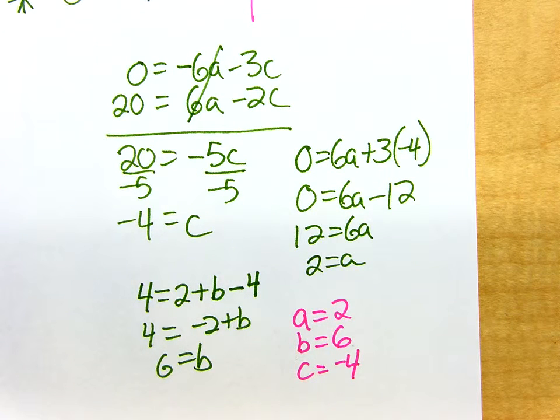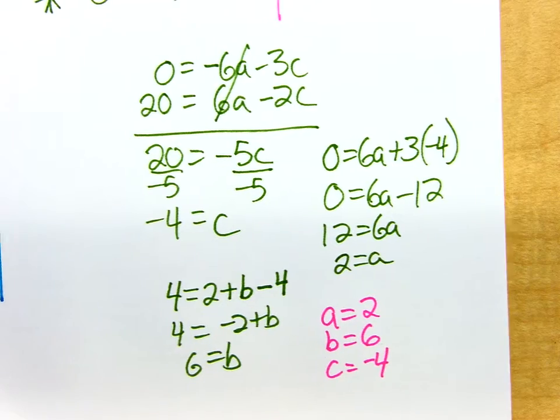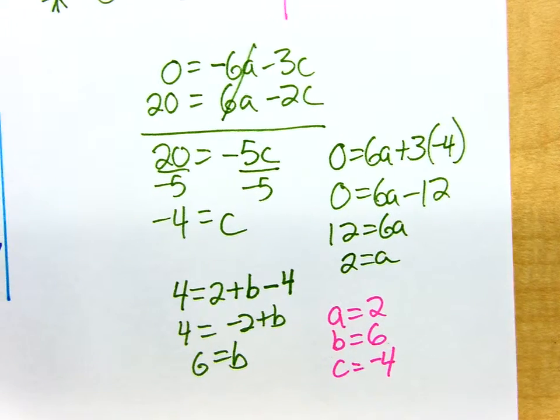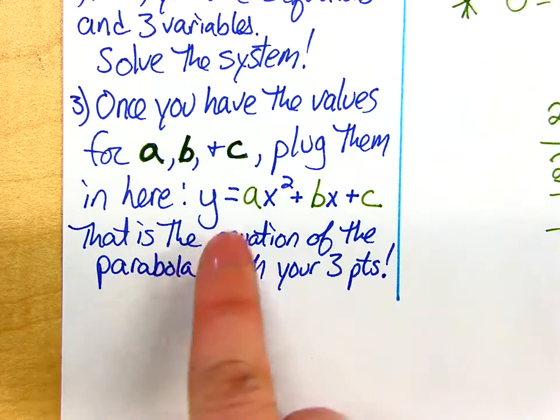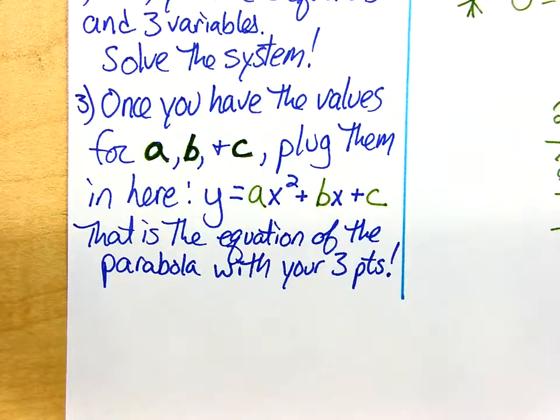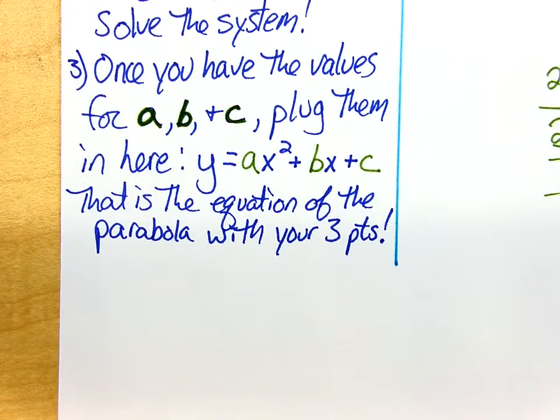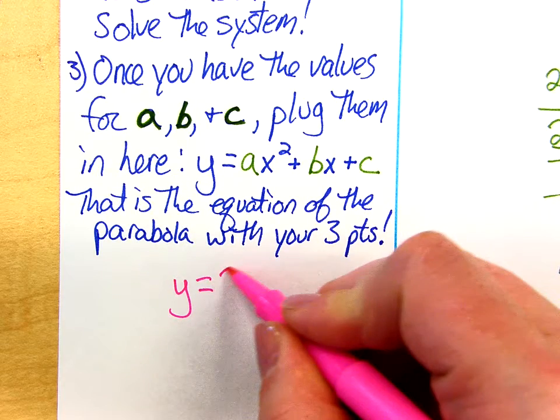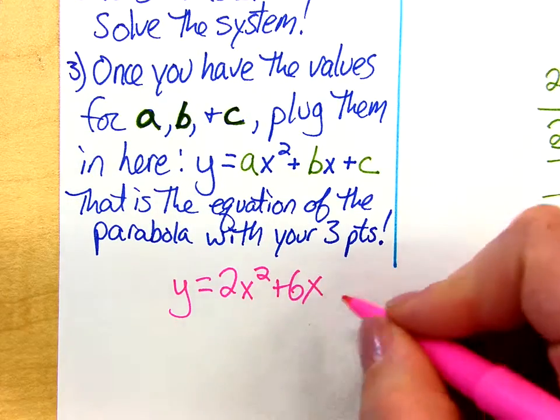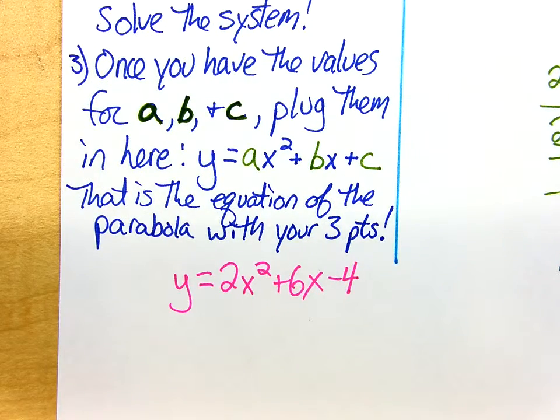Remember, you are pretty much done now. All you have to do is pop that back into standard form to actually create the equation. Step 3, once you have the values for a, b, and c, you're going to plug them in. Plug in a, plug in b, plug in c, and you'll be done. So for us, that's going to look like this. y equals a was 2, b was 6, and c is a negative 4. And you have just created the equation of the parabola that hits the three points that you were given.